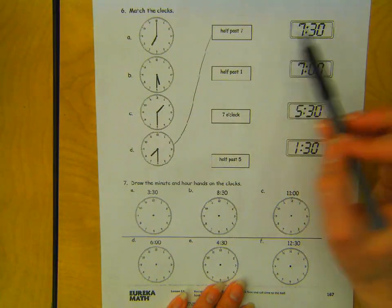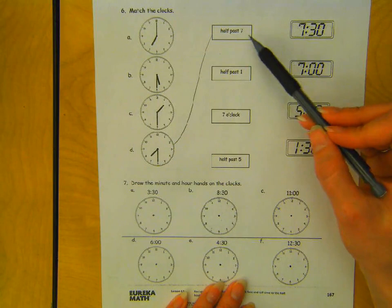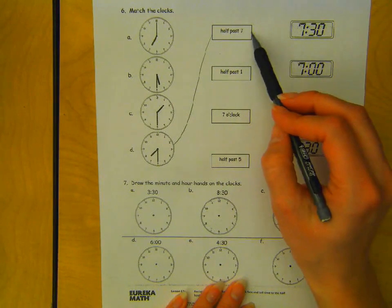And then I also need to do the digital clock. So half past 7 is the same as 7:30.